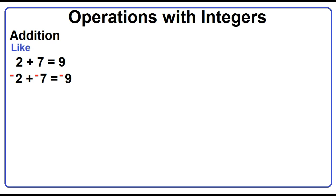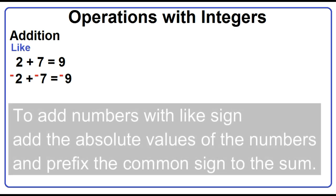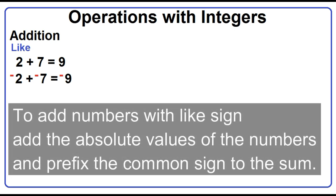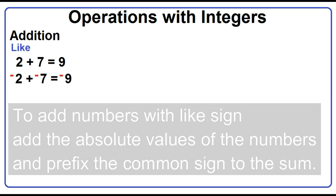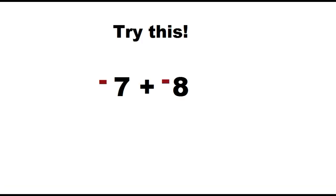Negative 2 plus negative 7 equals negative 9. To add two numbers with like signs, add the absolute values of the numbers and affix the common sign to the sum. Try this: negative 7 plus negative 8.